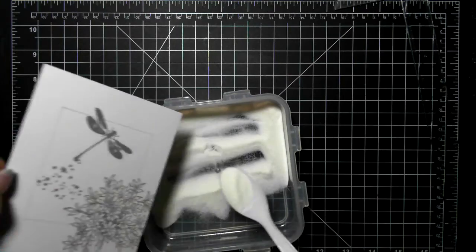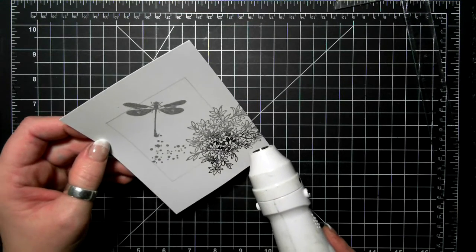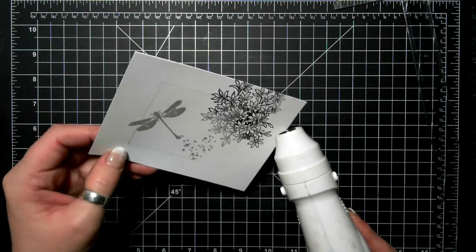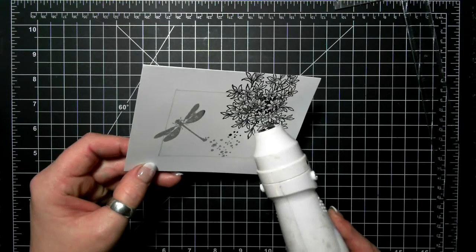The reason why I don't necessarily like black embossing is because there's little flecks that stick to the paper and I don't get a super crisp image so I do have a tendency to use the VersaFine.